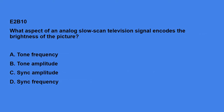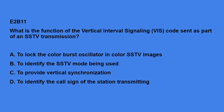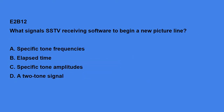E2B10: What aspect of an analog slow scan television signal encodes the brightness of the picture? The answer is: tone frequency. E2B11: What is the function of vertical interval signaling code sent as part of an SSTV transmission? To identify the SSTV mode being used. E2B12: What signals SSTV receiving software to begin a new picture line? Specific tone frequencies.